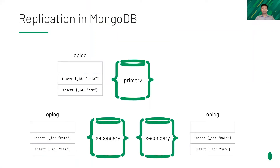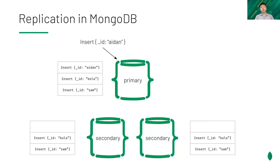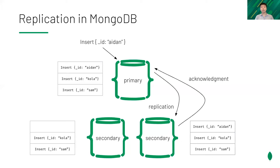To provide high availability, MongoDB uses a replication protocol similar to Raft. Each node replicates the operation log, called the op-log, via the consensus protocol. Each replica also maintains a local copy of the database by applying the operations in the same order. When you write to the primary, it will append an entry into its op-log. The secondaries replicate asynchronously. Once a majority of the group has replicated the write, it is considered committed.